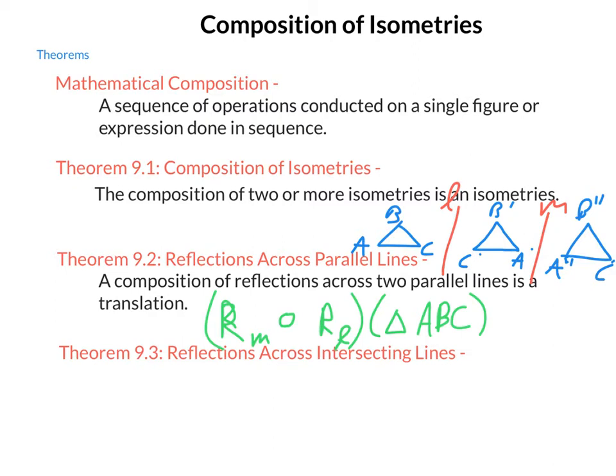So reflections across parallel lines, as long as it's an even number of parallel lines, is going to be a translation, and that distance will be twice the distance from L to M. That leaves us one more theorem to work with, that is reflections across intersecting lines.